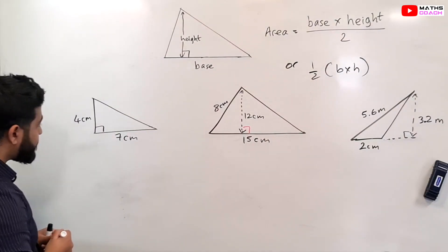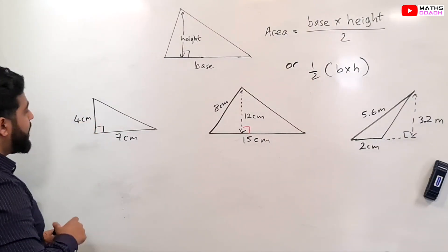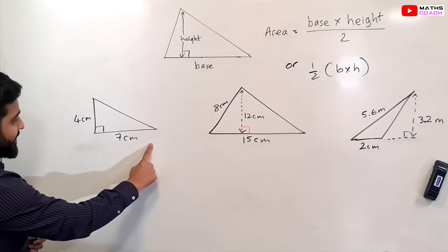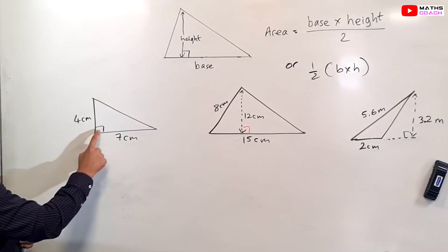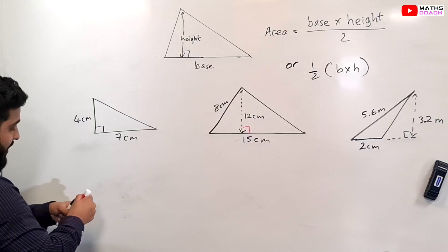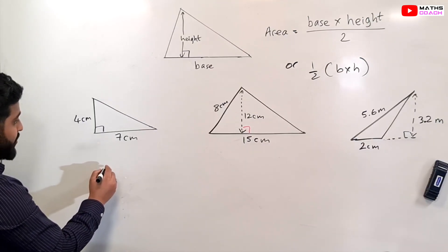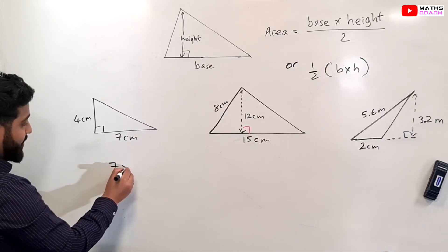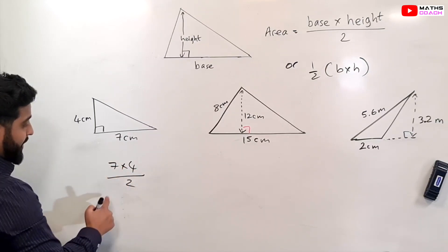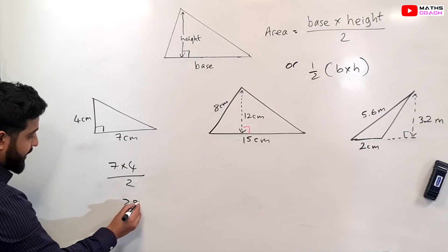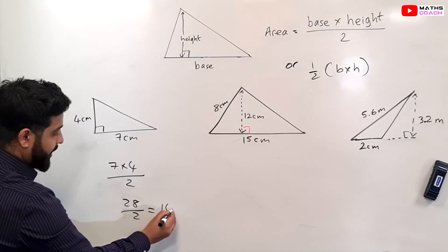Our first triangle here. We've got the base which is 7 and we know that this is the height because of the right angle there. So we can just apply our rule which is for area of a triangle is base times height divided by 2. So we have base of 7 times 4 divided by 2. 7 times 4 is 28. 28 divided by 2 is 14.